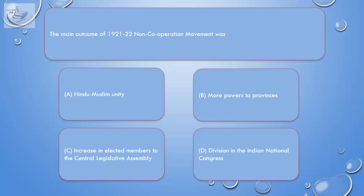Question: The main outcome of the 1921–22 non-cooperation movement was: A. Hindu-Muslim unity. B. More powers to provinces. C. Increase in elected members to the Central Legislative Assembly. D. Division in the Indian National Congress.